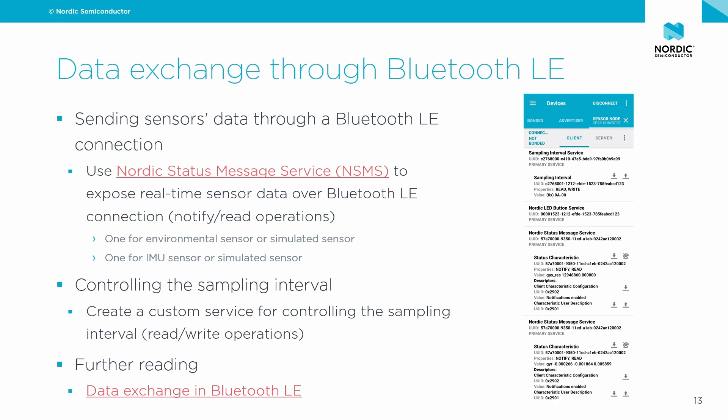We will change this to a dynamic, wireless control method by defining a custom GATT service. This will enable us from the mobile device to read the current sample interval and also to set new values for the sampling interval. If you'd like to learn more about how data is exchanged in Bluetooth Low Energy, check out Lesson 4 in the Bluetooth Low Energy Fundamentals course on Nordic Developer Academy — I'm providing the link in the slides.